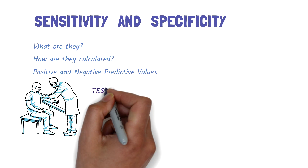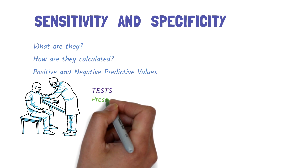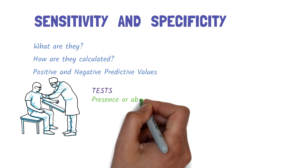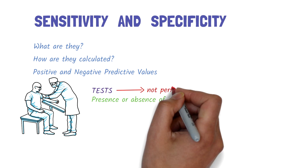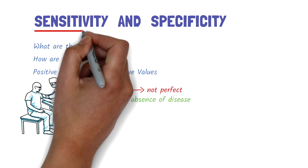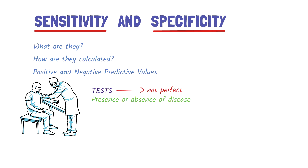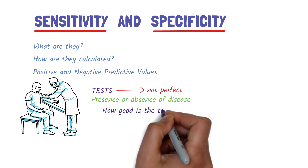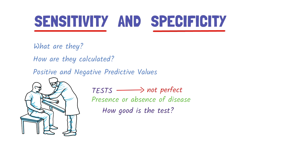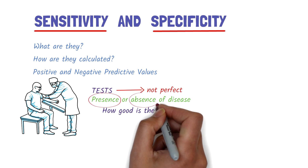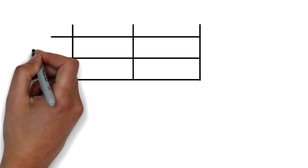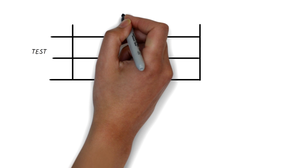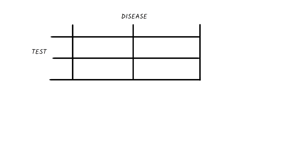Tests are important tools that can help us identify the presence or absence of a disease, but they're not always perfect. Sensitivity and specificity are measures that can be used to determine how good a test is at correctly identifying the presence or absence of disease. Let's take a closer look, using a table of test outcomes and disease status to learn about some of the terms that are used.